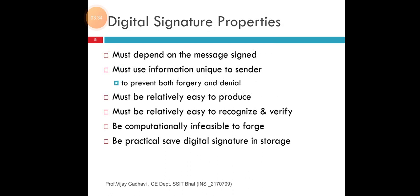There are a few properties. The signature must depend on the message signed. It must use information unique to the sender to prevent both forgery and denial. It must be relatively easy to produce, relatively easy to recognize and verify, and computationally infeasible to forge. For storage of digital signatures, there are two data structures available.